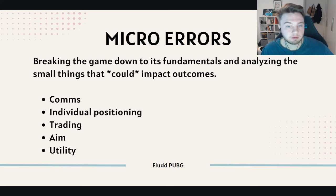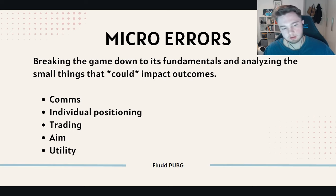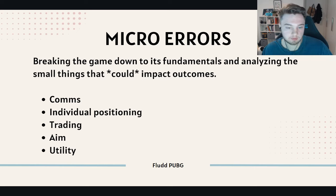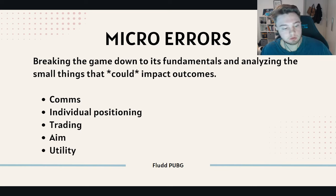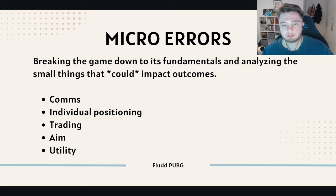Once we break problems down, they fall into two categories: micro errors and macro errors. Micro errors break the game down to its fundamentals — analyzing the small things that impact outcomes. When we think about micro, we're thinking about comms, individual positioning, were we in the right spot, were we grouped together so a teammate could trade us if we peaked a ridge, did we whiff shots, and did we use our utility — did we die with smokes, nades, or stuns?